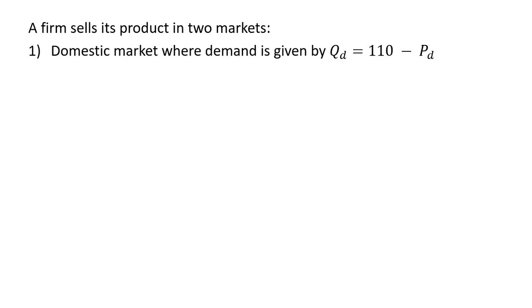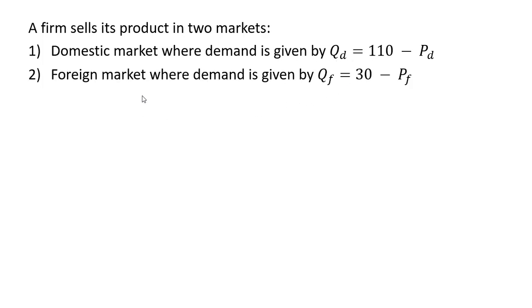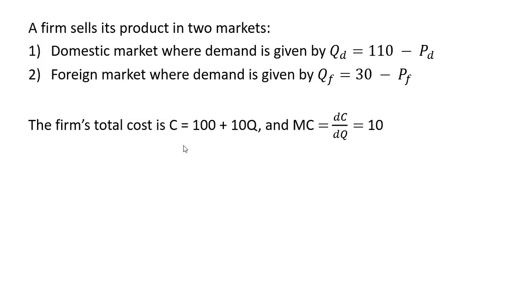We have a firm that sells its product in two markets: a domestic market and a foreign market. The firm's total cost is C equals 100 plus 10Q, where 100 is a fixed cost and the variable cost is 10 times Q. Taking the derivative of the cost equation, we can see that marginal costs are constant at $10.